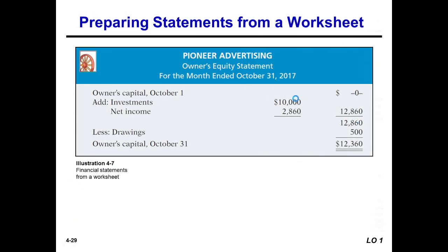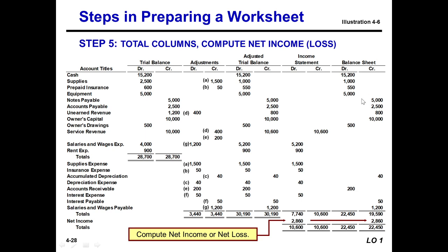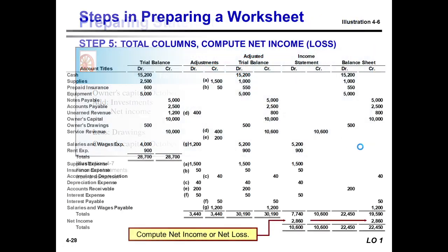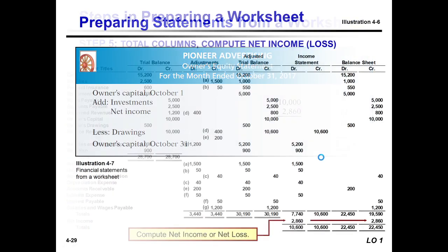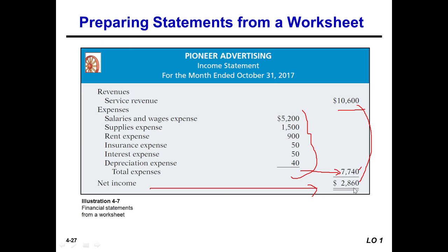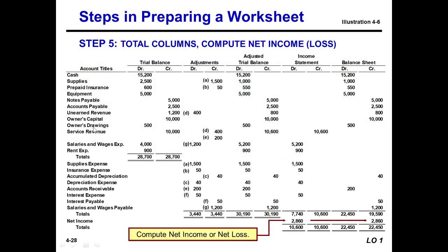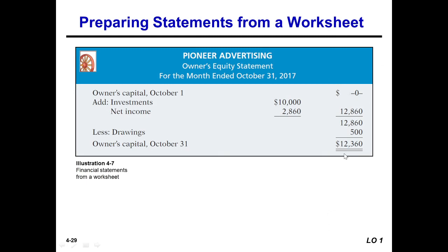Now we prepare the owner's equity statement. We know that the owner's equity statement and balance sheet are prepared from the balance sheet columns of the worksheet. The owner's capital investment in October is ten thousand. The net income we obtained is two thousand eight hundred sixty, so we use that net income of two thousand eight hundred sixty. After adding these two figures we get twelve thousand eight hundred sixty. We have owner's drawings of five hundred, so we subtract that.